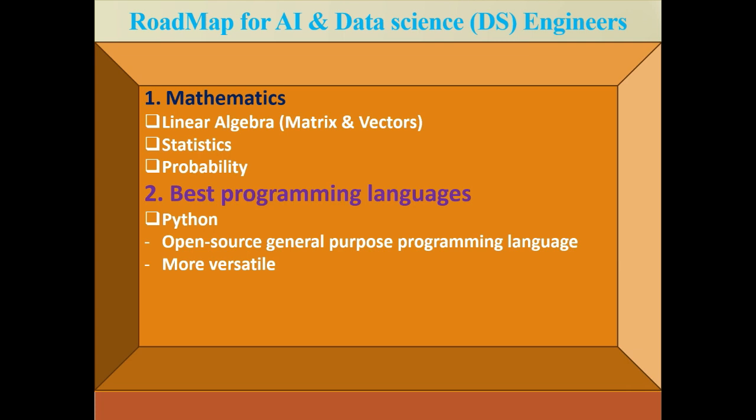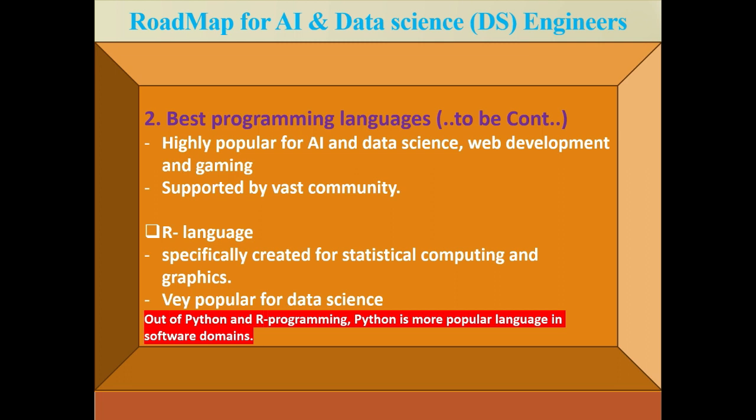Next is the programming language. The two main programming languages for AI and data science are Python and R. R programming is especially preferred for data science, but it has some limitations compared to Python. Python is more versatile, open source, and a general-purpose programming language, preferred by software and data science engineers. Python is supported by a vast community, can be used for web development and gaming, and models built with Python are easily deployed on different platforms and cloud, unlike R.